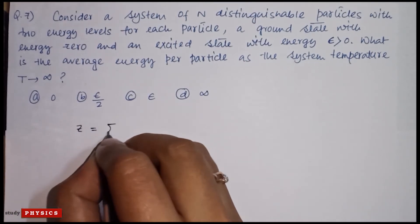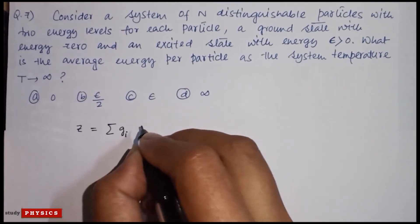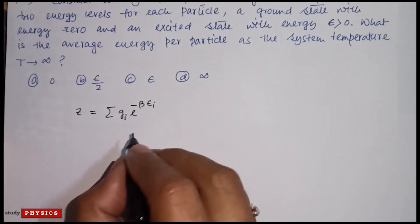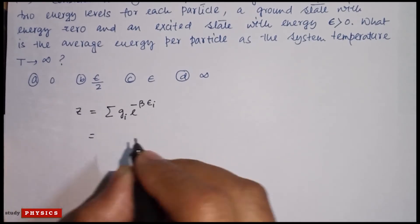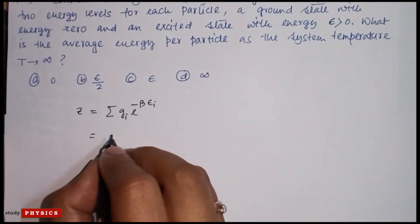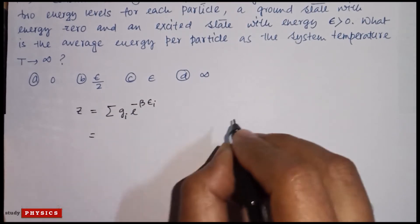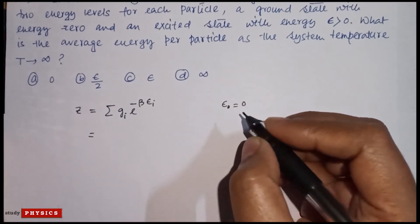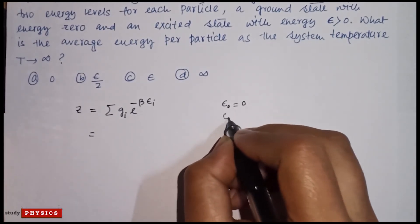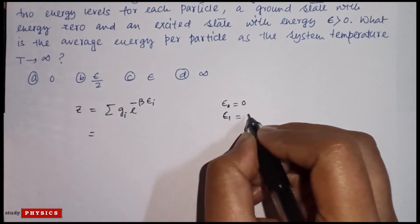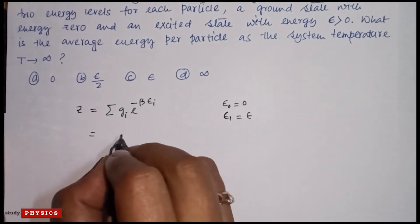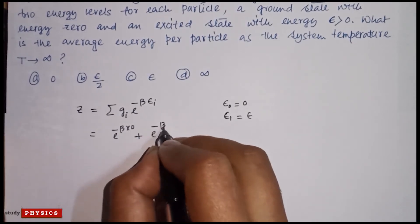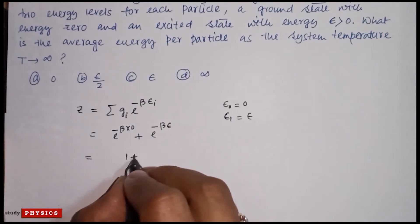The partition function Z is the summation of g_i (degeneracy) times e^(−βE_i). First we find the partition function. Here degeneracy is 1 for N distinguishable particles. The first energy is zero (ground state) and the excited state energy is E. So Z = e^(−β×0) + e^(−β×E), which gives Z = 1 + e^(−βE).